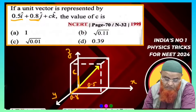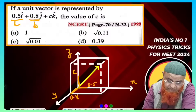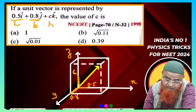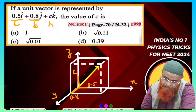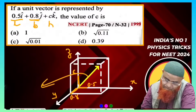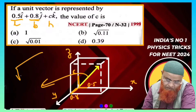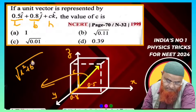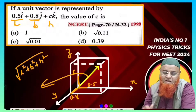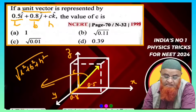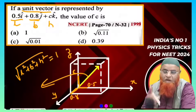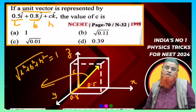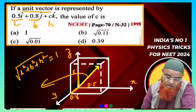The diagonal of a cuboid is given by the formula: diagonal = √(L² + B² + H²). Since it is a unit vector, the magnitude of the diagonal equals 1 unit — that is the key meaning of this question.